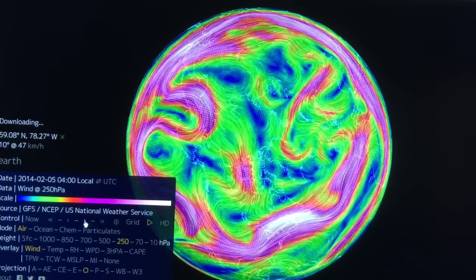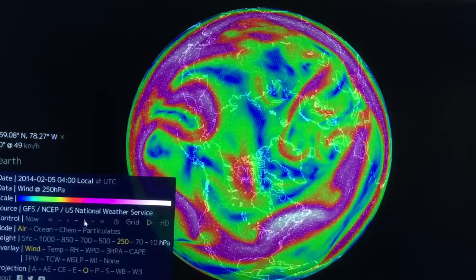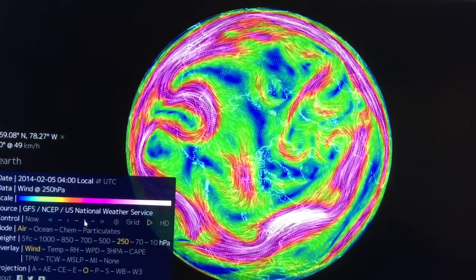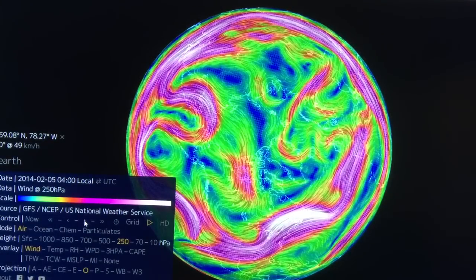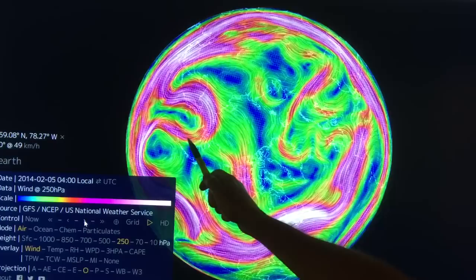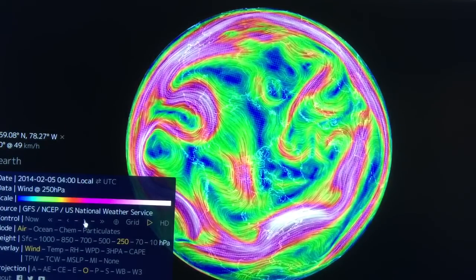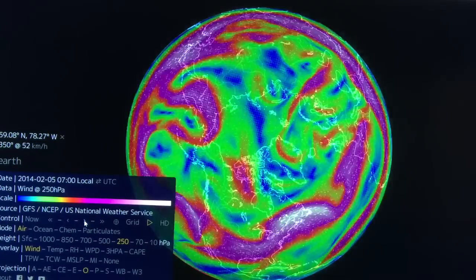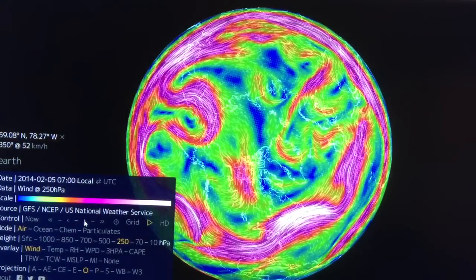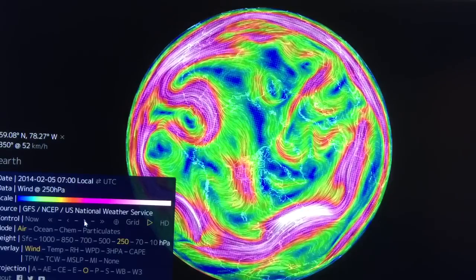And watch what happens as it progresses here. So it moves further into the Arctic and the right hand side or the lower side starts to weaken and then eventually get pinched off. There it is, it's starting to get pinched off here.